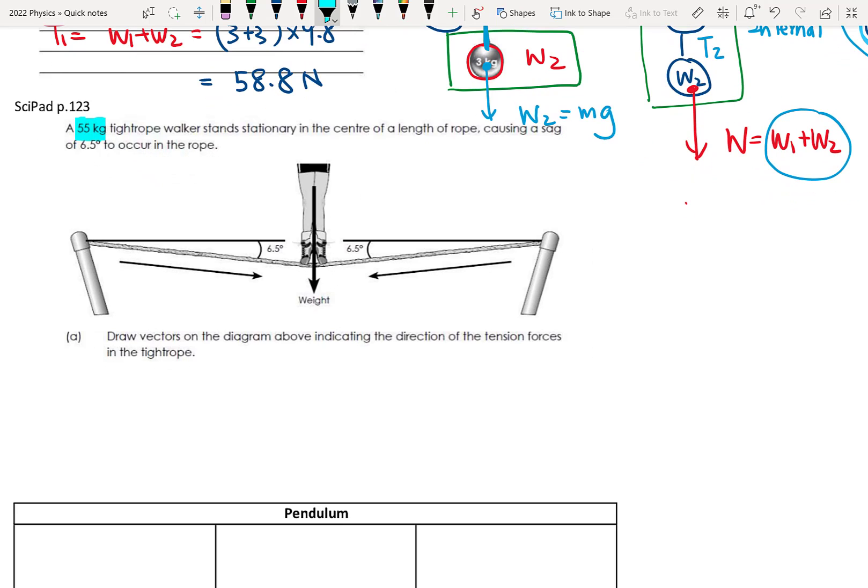This person is 55 kg and then stands at the center, and there's a 6.5 degree angle here. So I only put question A here, but I think at the end, we need to know the tension of the rope.